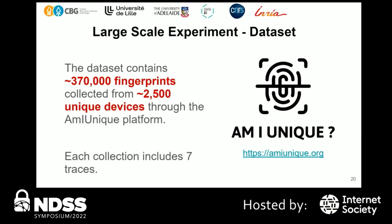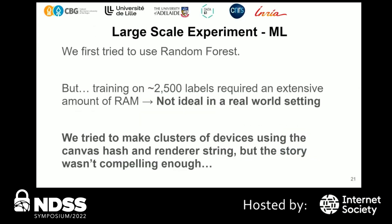This dataset contains around 307,000 fingerprints collected from around 2,500 unique devices, with each collection including seven traces — a balance between the number of traces we want and the computation cost to users. We first tried random forest, but with around 2,500 labels it required too much RAM and our server couldn't handle it. Trimming down the forest hurt the expressive power of the classifier. We then tried clustering devices using canvas hash and renderer string, but this approach wasn't robust — if a machine's canvas hash or renderer string changed, it would leave its cluster and could never be classified again.